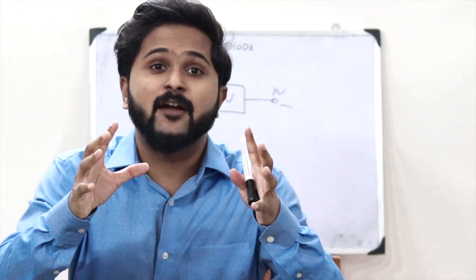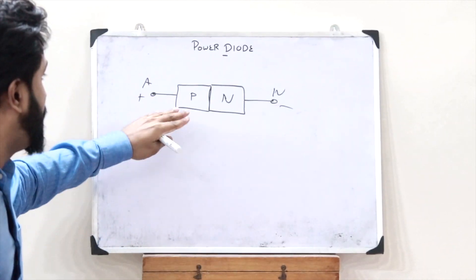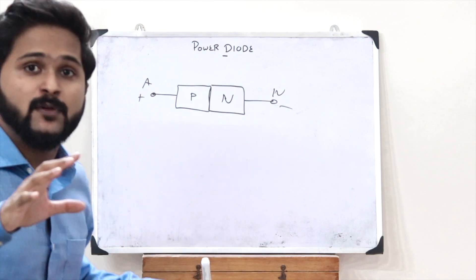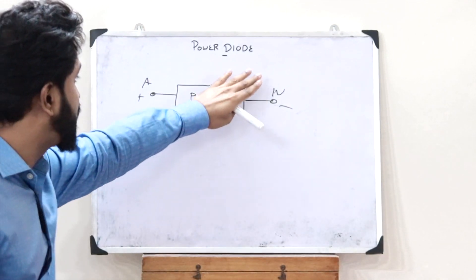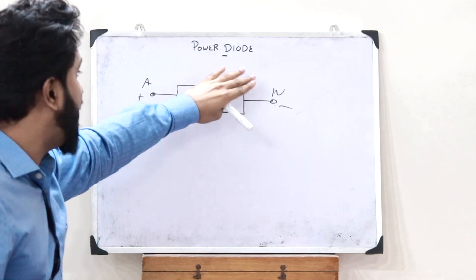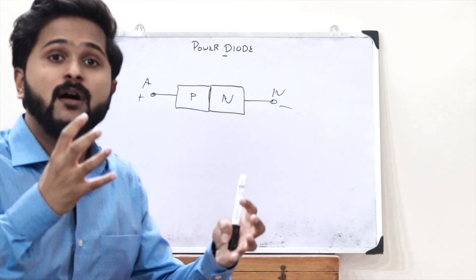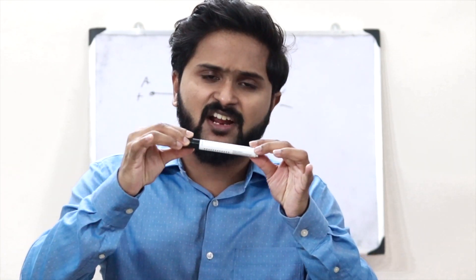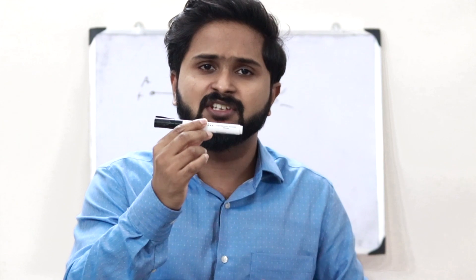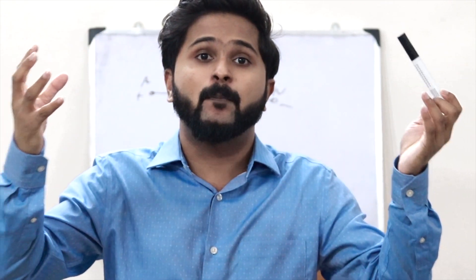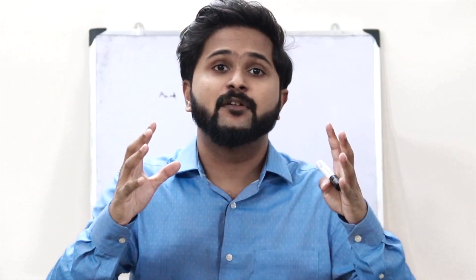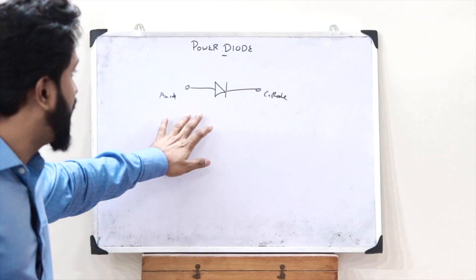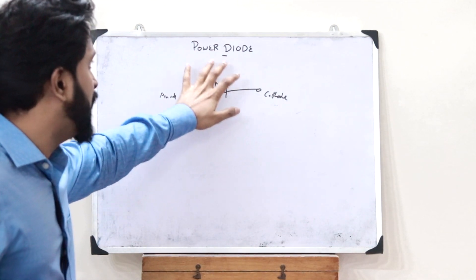So a power diode is basically just a P-N junction diode in which certain changes are brought to its structure so that it has increased power handling capabilities. That is simply changing the structure of a particular P-N junction diode so that it would have increased power handling capabilities. Therefore, the symbol of a power diode is given like this.